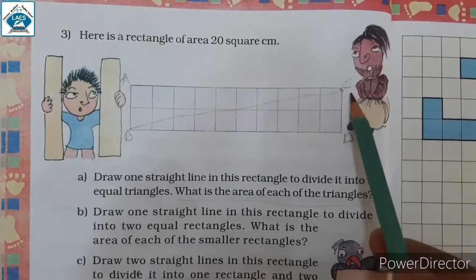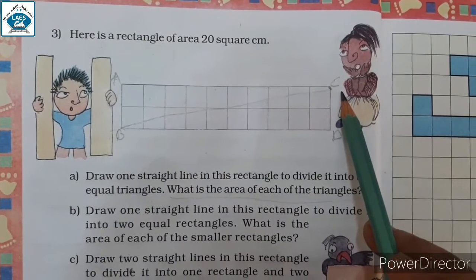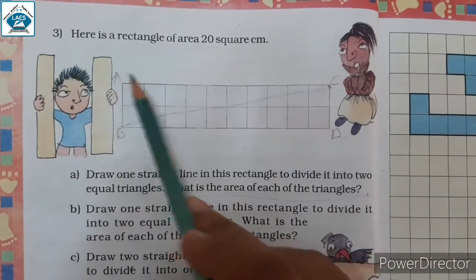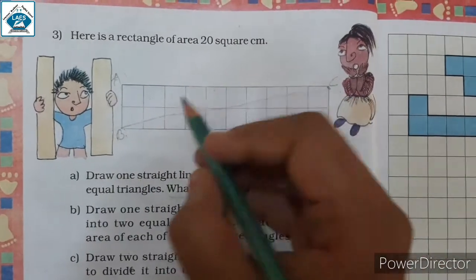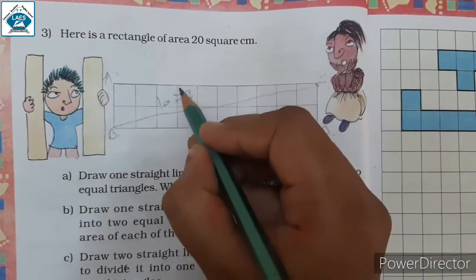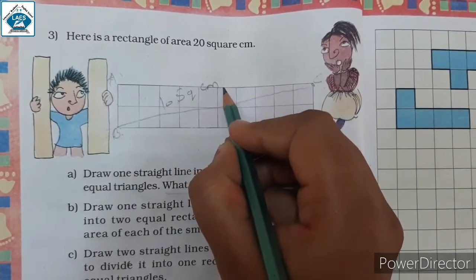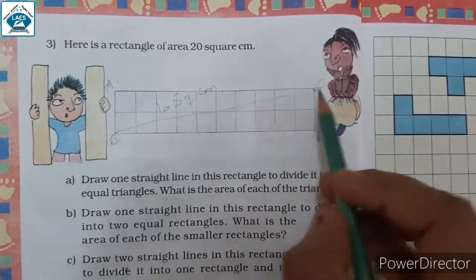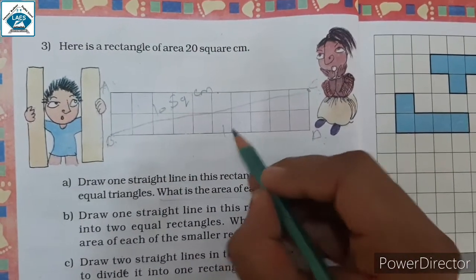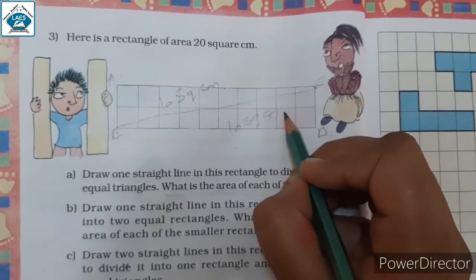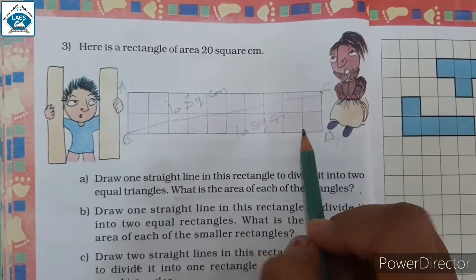Two corners you have to join. You can write that triangle ACB is 10 square centimeter in area, and triangle BCD is also 10 square centimeter in area. Both have equal area.